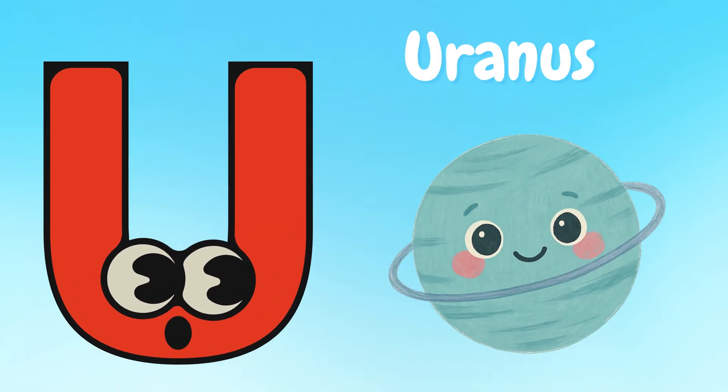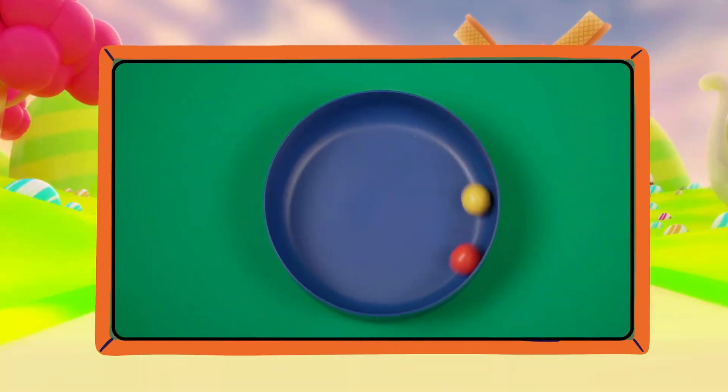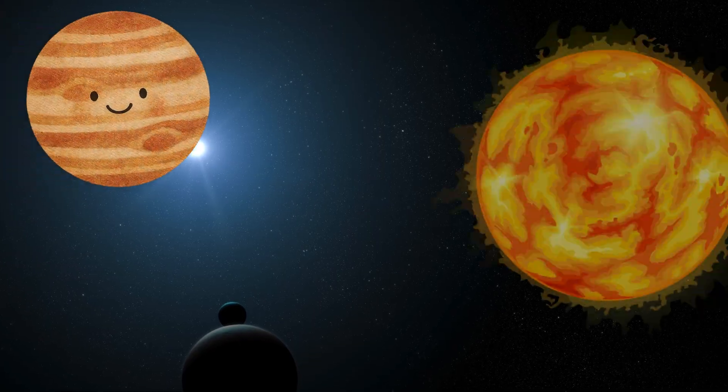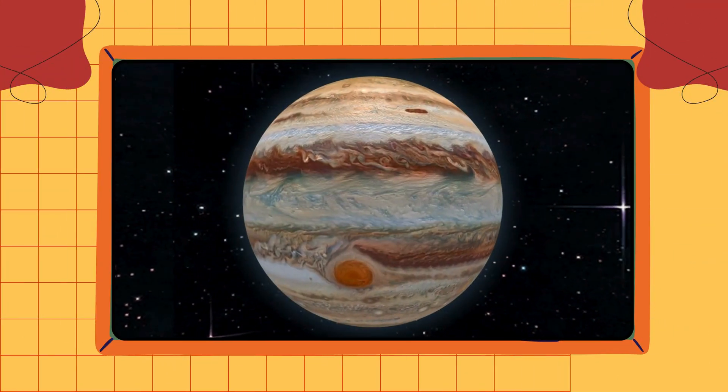U is for Uranus. Uranus rolls on its side like a sleepy ball. V is for Venus. Venus shines brightest and wears thick, cloudy clothes.